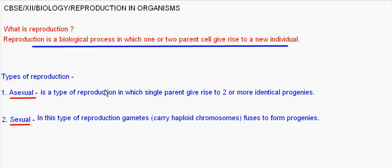What is Asexual Reproduction? It is a type of reproduction in which a single parent gives rise to two or more identical progenies, which can also be called clones.